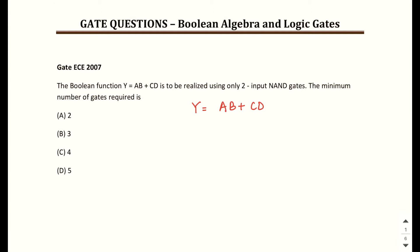For the implementation we need to bring the expression into a form so we can realize it through NAND gates. To do that, insert two complements over the expression. If you open up one of the complements using De Morgan's law you get: (ab)̄ · (cd)̄. This comes in the form of NAND gates — one NAND gate for ab, another for cd, and finally a third for the overall complement. So the answer is that we require three NAND gates to implement ab + cd.